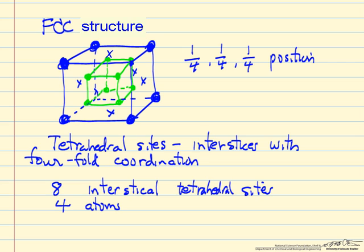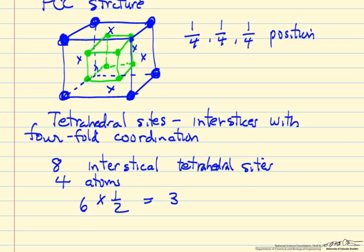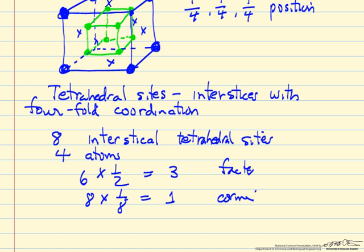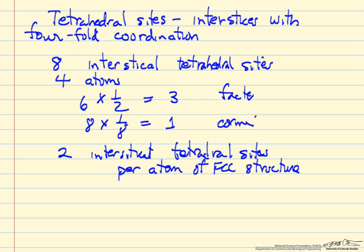The four atoms correspond to, we have six faces, atoms on each face. It's shared with the unit cell next to it. So it's six times one-half. So we have three atoms from the faces. And then in the corner we have eight atoms, but they're shared, each of them with seven others. So there's only one-eighth in the corners. You can see now we have a total then of four atoms in the unit cell, eight interstitial sites. We have two interstitial tetrahedral sites. Two interstitial tetrahedral sites for every atom of the FCC structure.